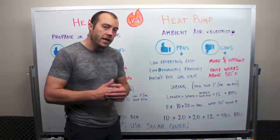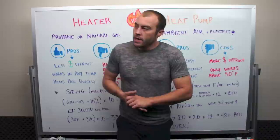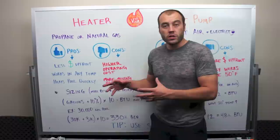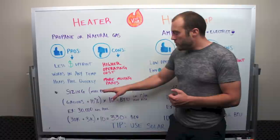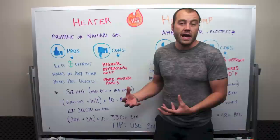In our example, we take a pool that is 10 feet by 20 feet by 2 degrees raised times 12 equals 48K BTU. Now compare that to a heater. They're sized a little bit differently.